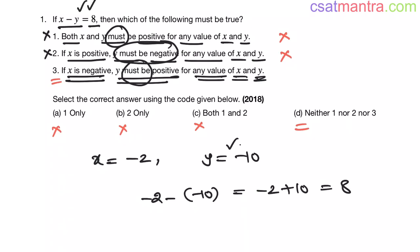So even if y is negative, this statement is correct, my friends. Therefore, our conclusion three is not valid. So neither one, nor two, nor three conclusions are valid. Our answer is d.